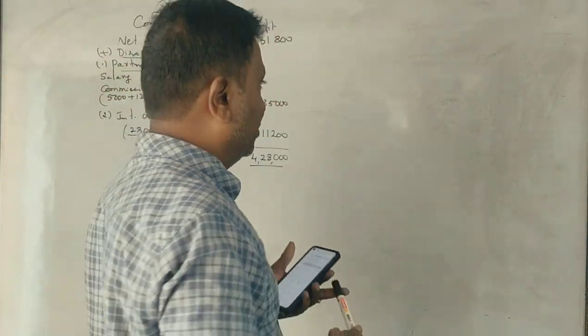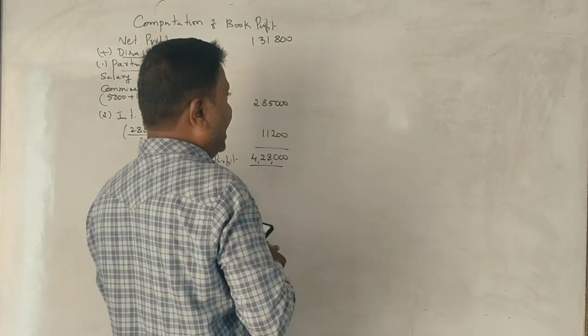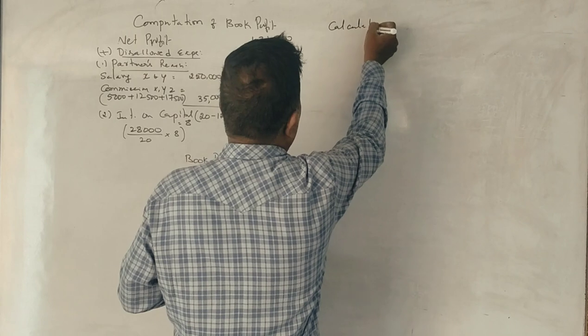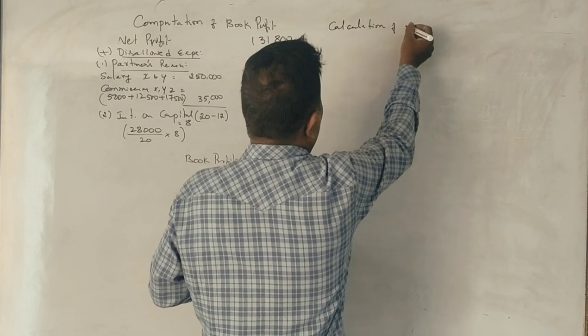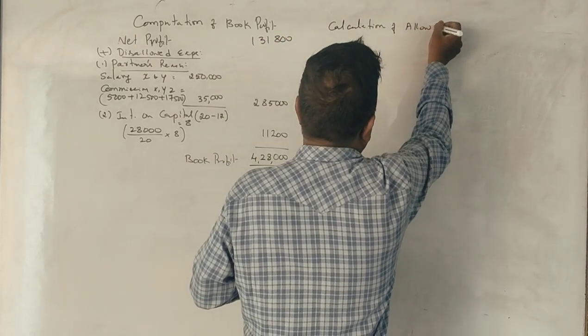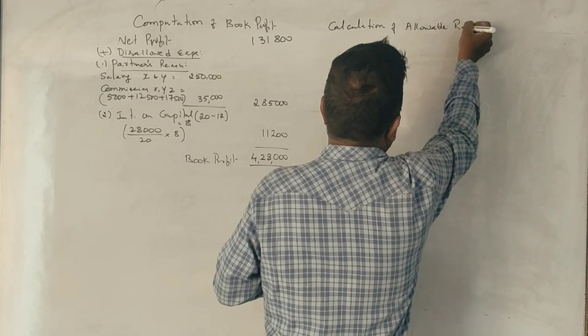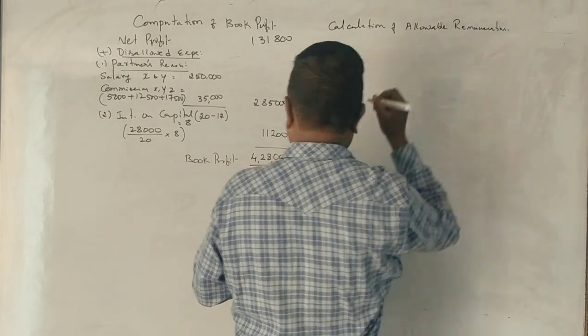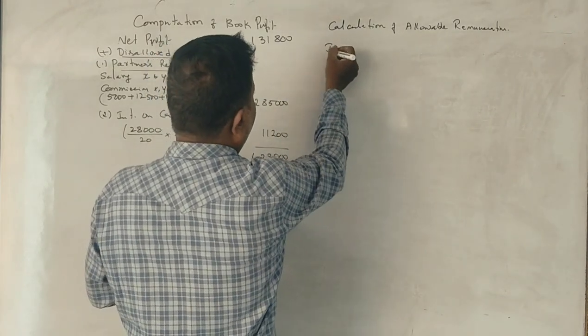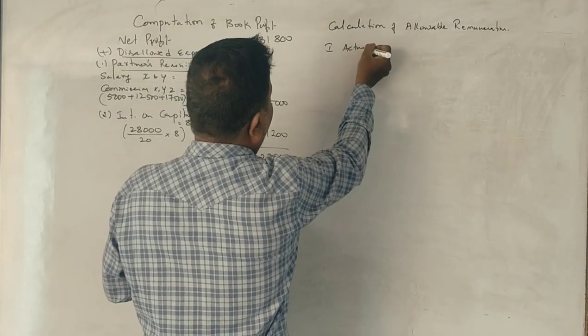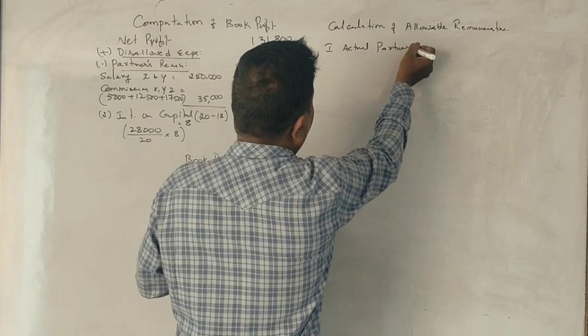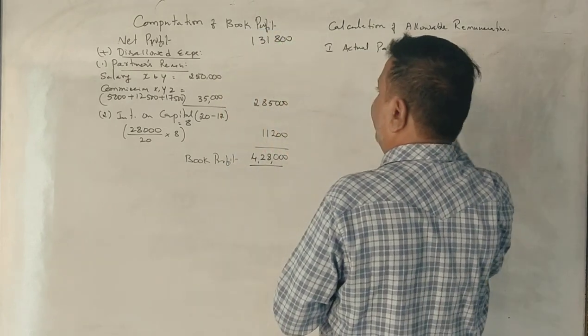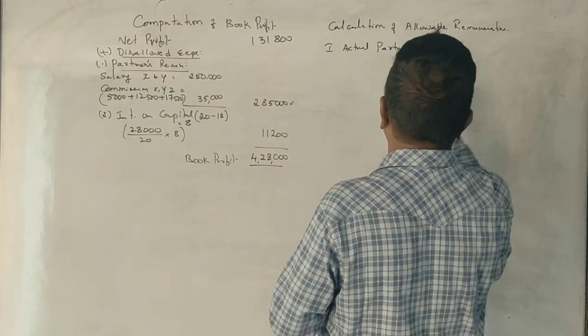Now, allowable remuneration. What is the calculation of allowable remuneration? So, this is the partners allowable remuneration. First point is actual remuneration, actual partners remuneration. We have found it, Rs. 2,85,000.